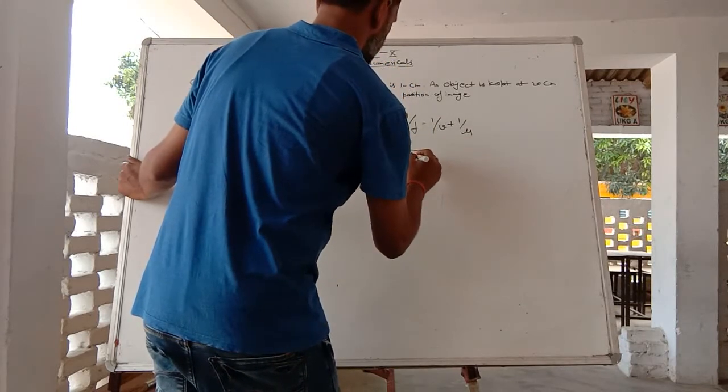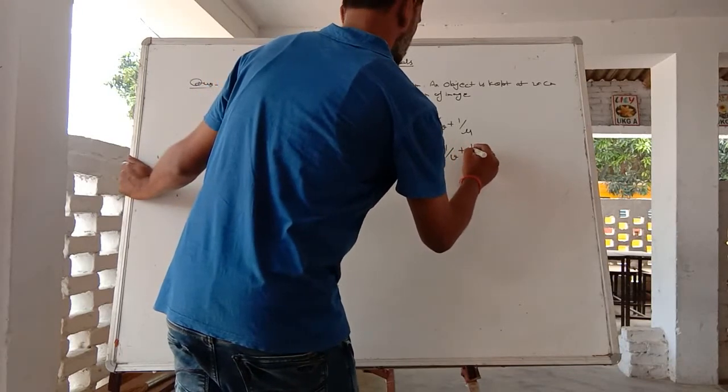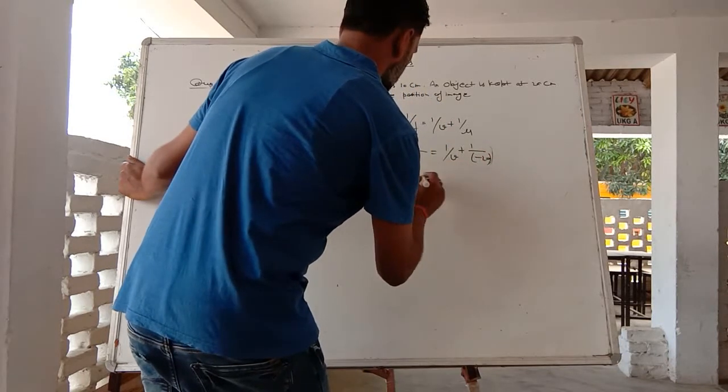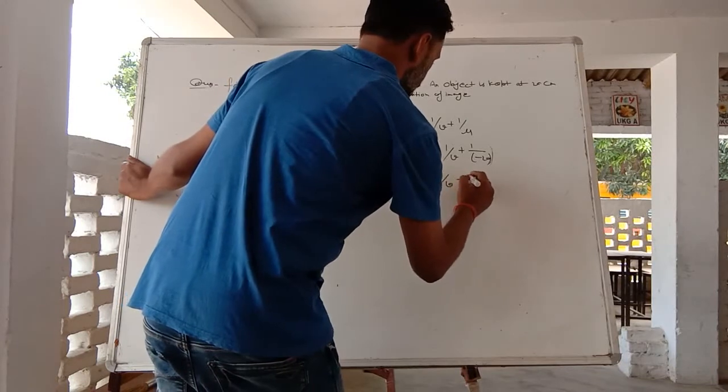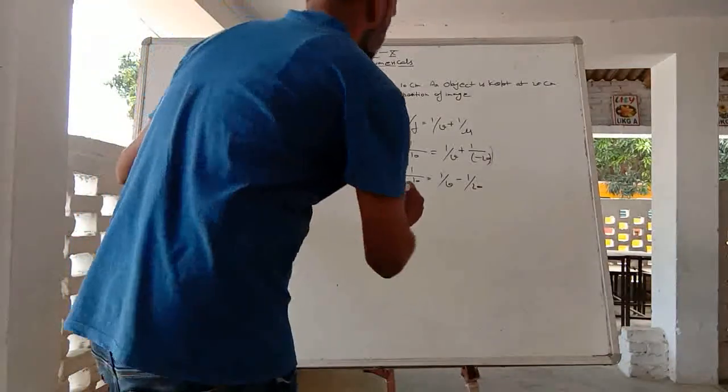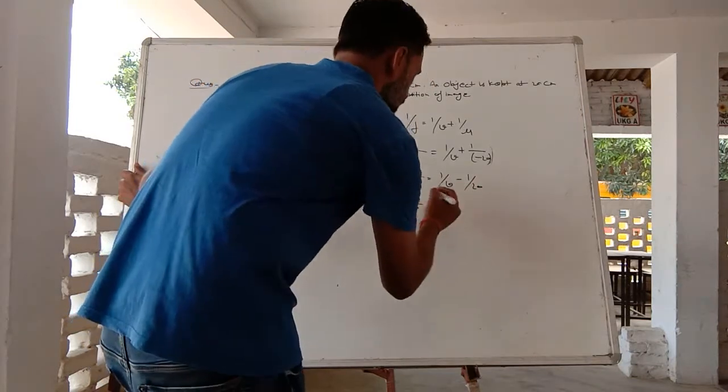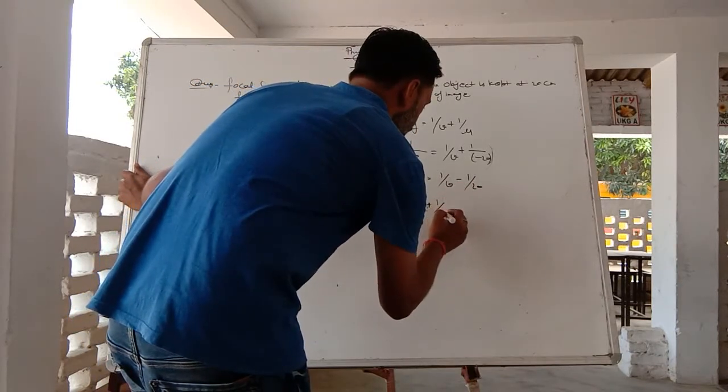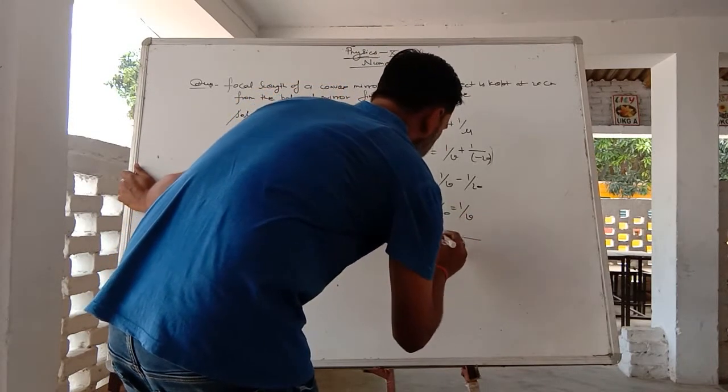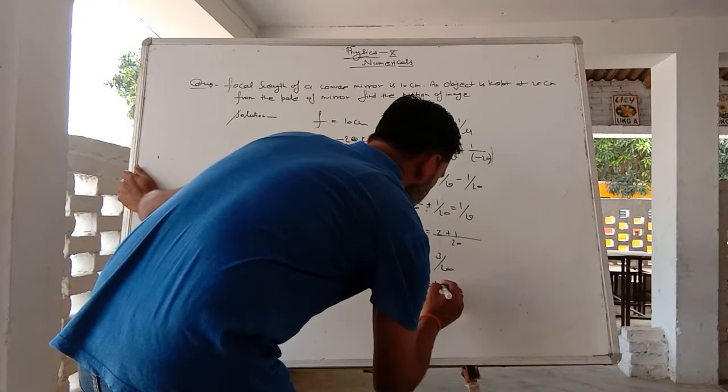So 1 upon f value, 1 upon 10 is equal to 1 upon v plus 1 upon minus 20. So 1 upon 10 is equal to 1 upon v minus 1 upon 20. 1 upon v is equal to, taking LCM, 1 upon v is equal to 3 upon 20.